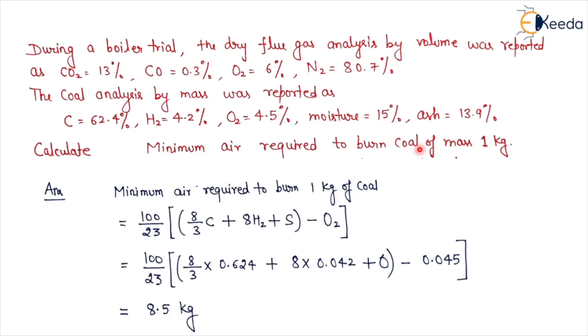I have already explained in my previous lecture that the minimum mass of air required to burn the 1 kg of coal or for complete combustion of 1 kg of coal is given as 100 by 23 bracket then 8 by 3 times carbon plus 8 times hydrogen plus sulfur bracket close minus O2. This is the formula which I have already explained in my previous video.